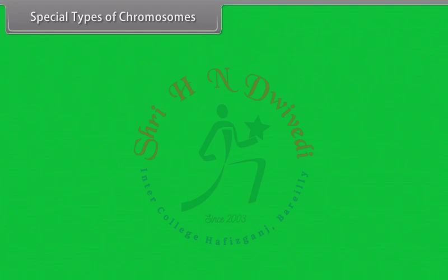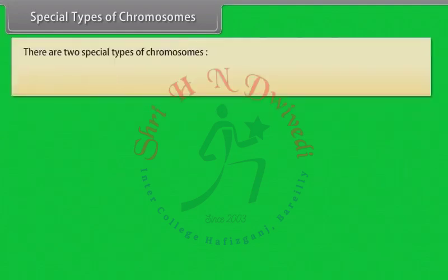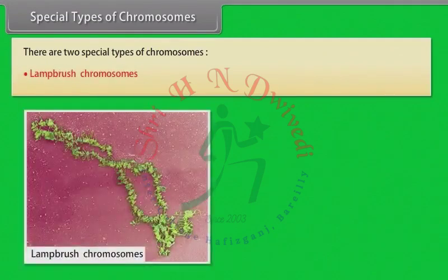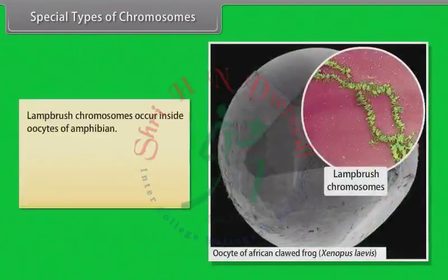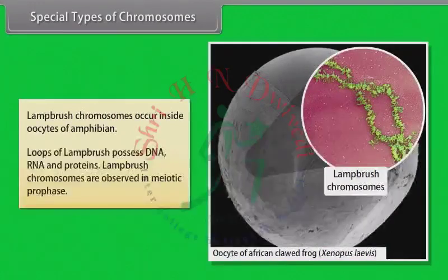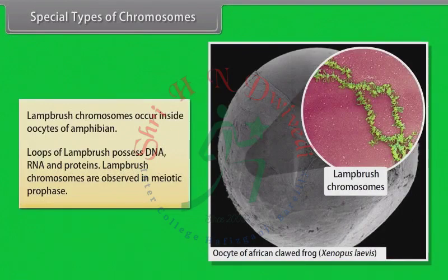Special types of chromosomes. There are two special types of chromosomes: lampbrush chromosomes and polytene chromosomes. Lampbrush chromosomes occur inside oocytes of amphibians. The loops of lampbrush chromosomes possess DNA, RNA, and proteins. Lampbrush chromosomes are observed in meiotic prophase.